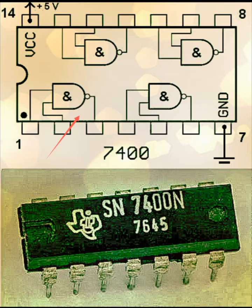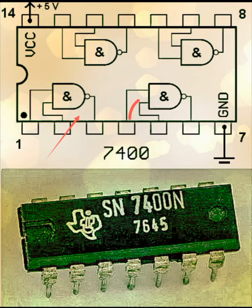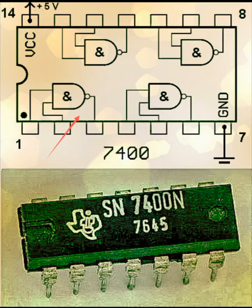Each of these gates has two inputs and one output. As you can see clearly, the symbol of the NAND gate with the bubble at the output — here also you have two inputs and one output, and in this gate also two inputs and one output, and finally for the last gate, two inputs and one output.